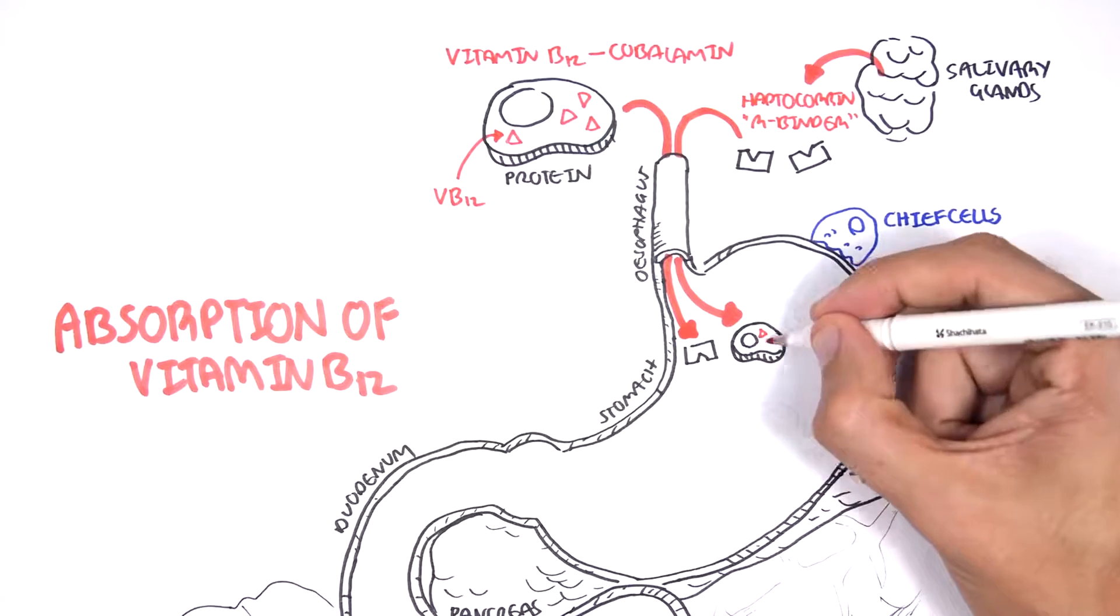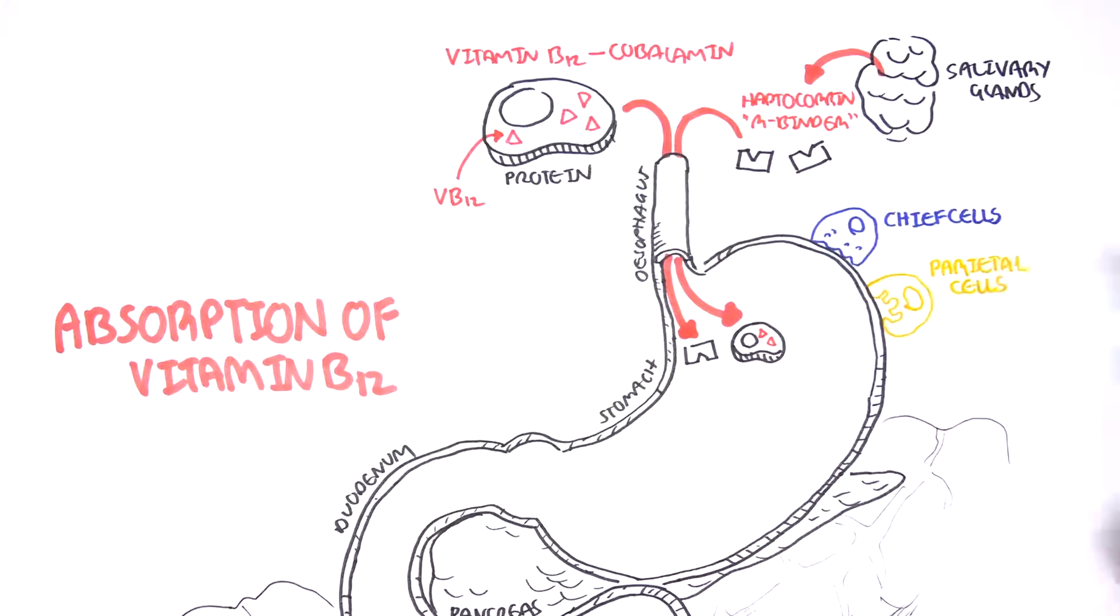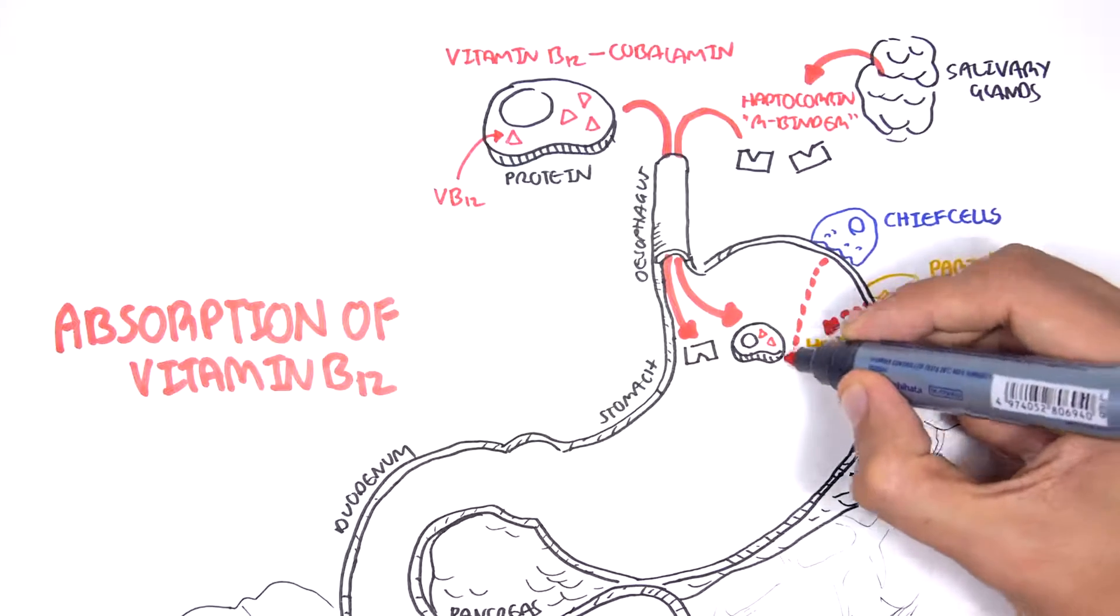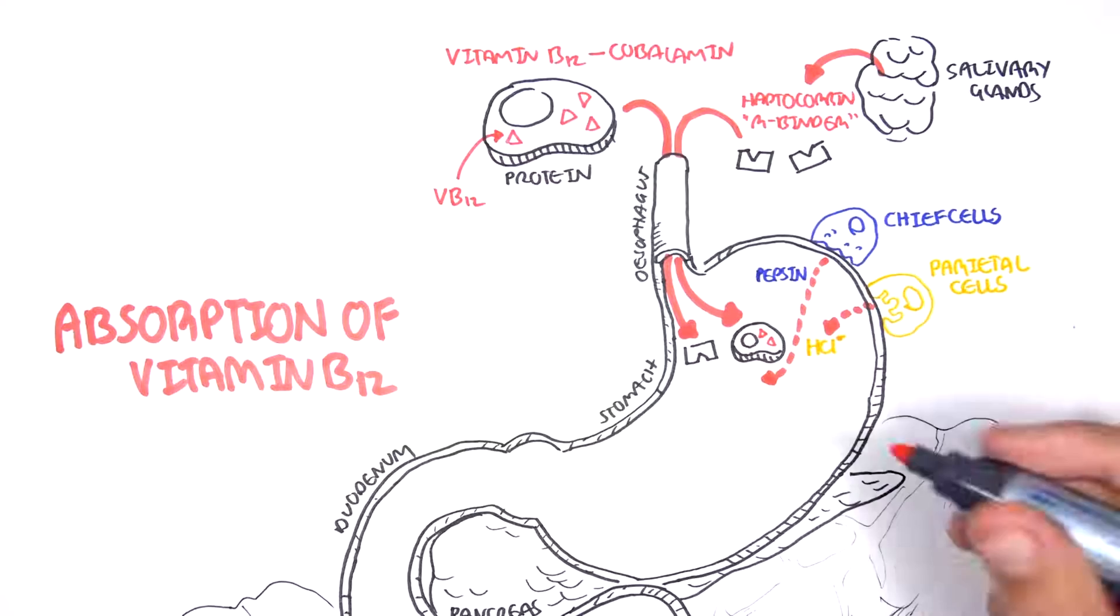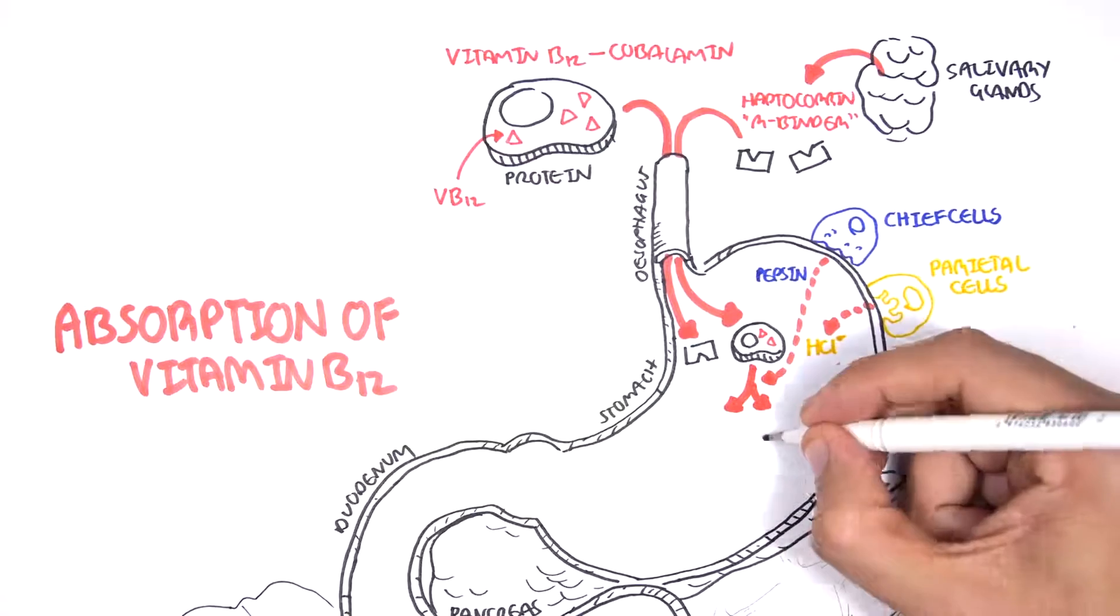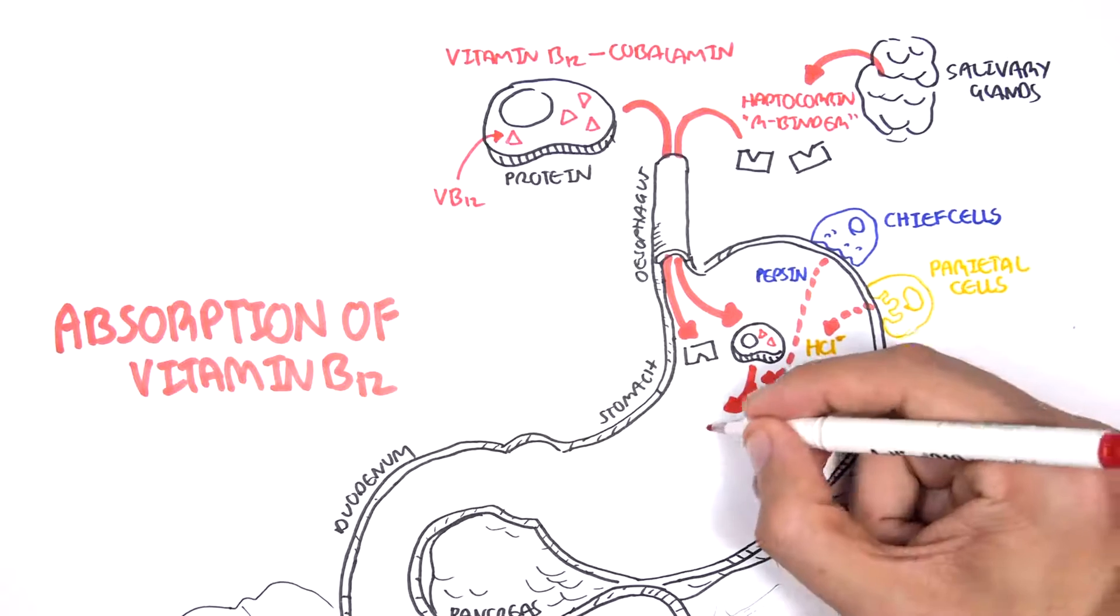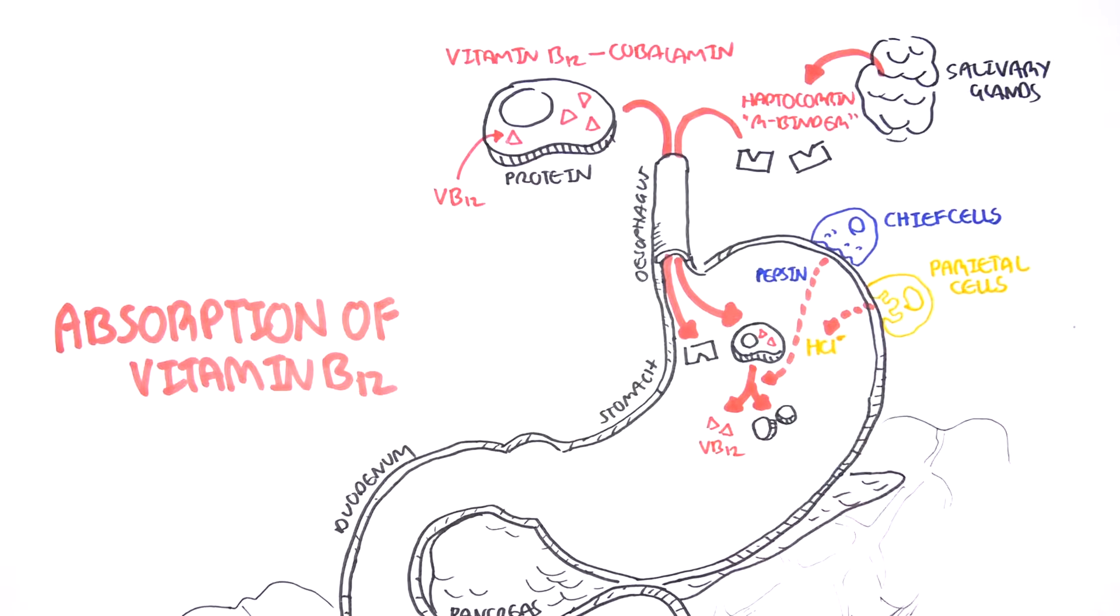In the stomach, the chief cells secrete pepsinogen, which gets converted to pepsin in the presence of hydrochloric acid. Hydrochloric acid is secreted by the parietal cells of the stomach. Hydrochloric acid, together with pepsin, help in the digestion of meat, liberating the vitamin B12.